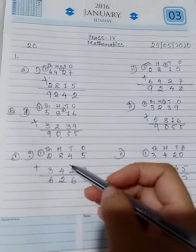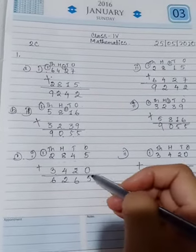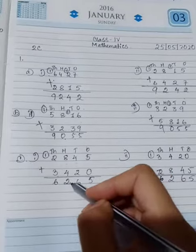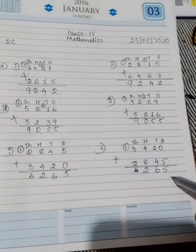Next here is also same. 2, 8, 4, 5, plus 3, 4, 2, 0. 5, 4 plus 2, 6, 8 plus 4, 12, 2, 1 is carried over, 2 plus 1, 3, 3, 3, 6. And here is also same.